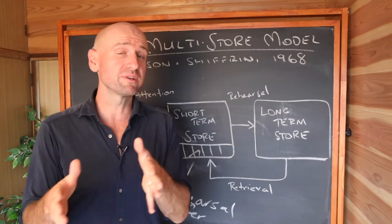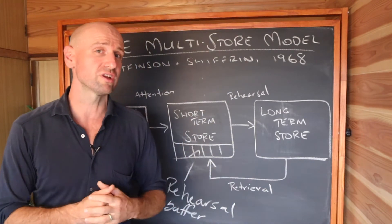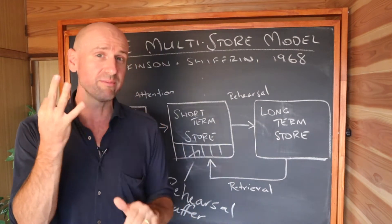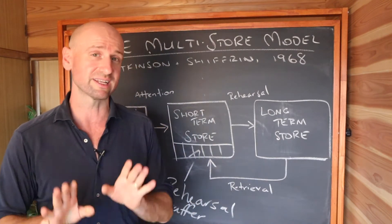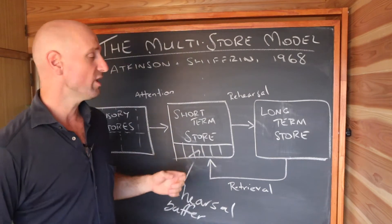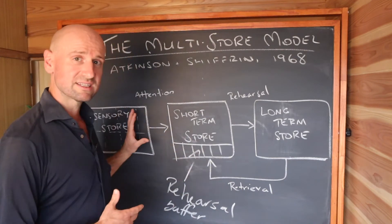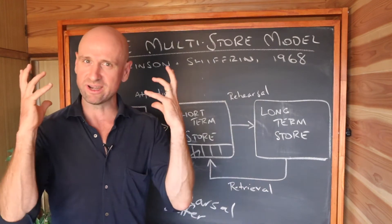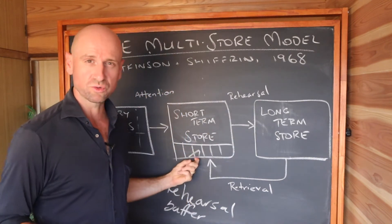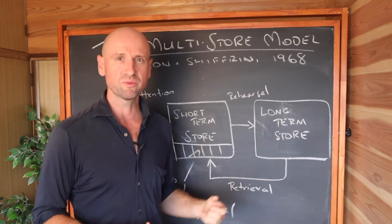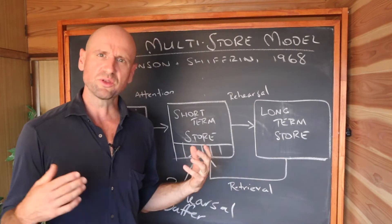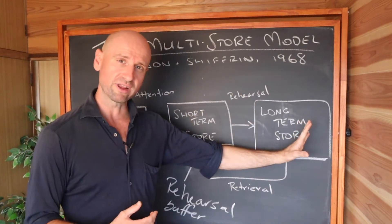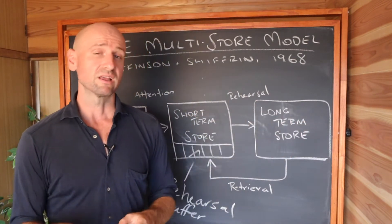You might also be surprised to learn there's quite a bit of contradictory evidence to the multi-store model. Let's look at three major ones. Number one: the idea that information always has to go from short-term to long-term store is challenged by the case study of KF. KF had a brain injury — he had virtually no short-term memory capacity, but his long-term memory was basically undamaged. This suggests that information doesn't necessarily have to pass through the short-term store before getting into the long-term store.